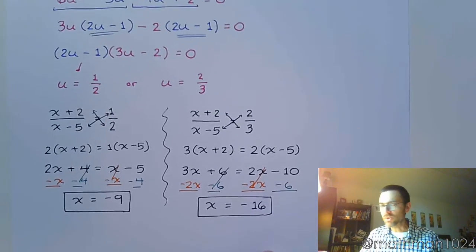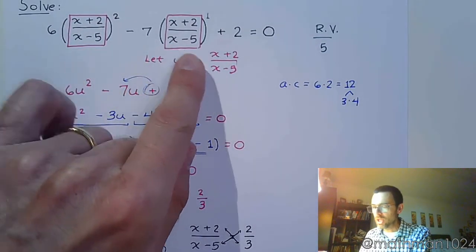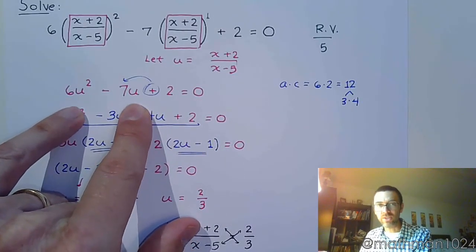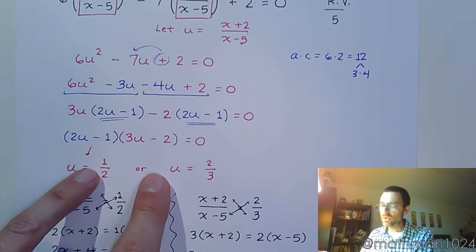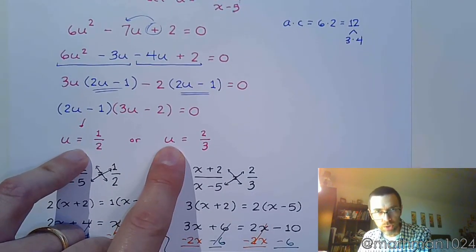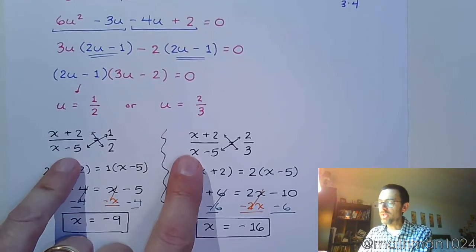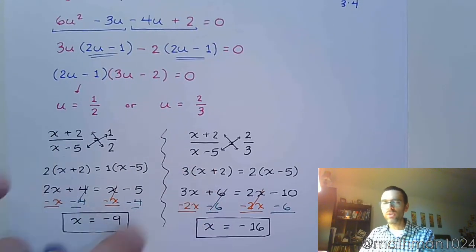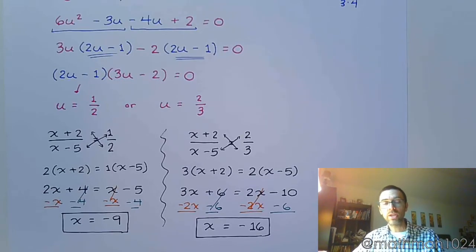So the big thing here is making sure that we can rewrite our original equation using a substitution. We can write this as a quadratic, which then factors. You solve this for u, but then you have to go back and remember what u is representing. u is representing this fraction. And so at this point, you've got two separate equations to solve. They end up being proportions. And you solve them one at a time. And you get your answers.